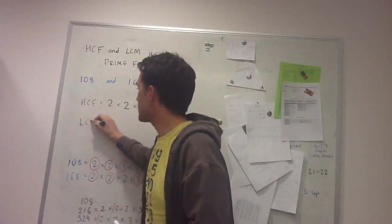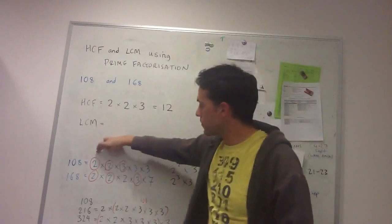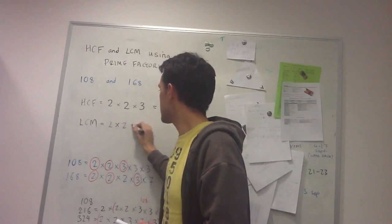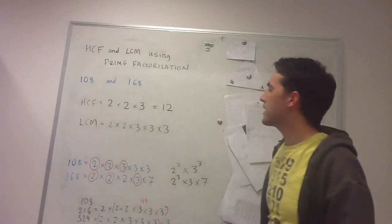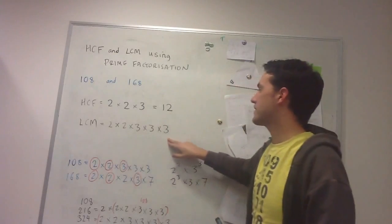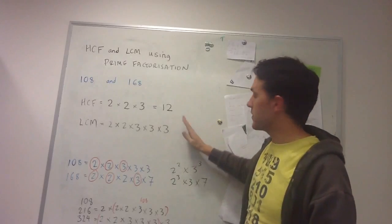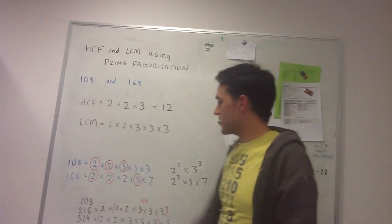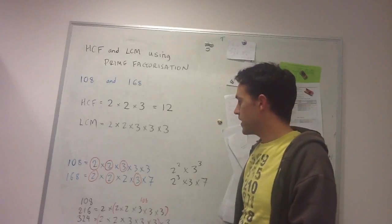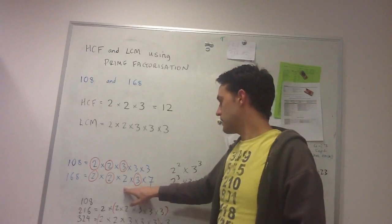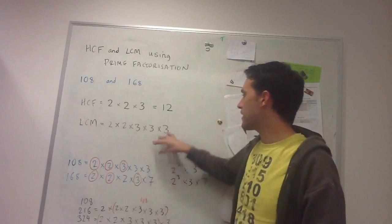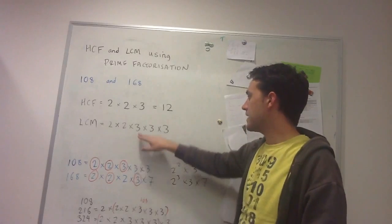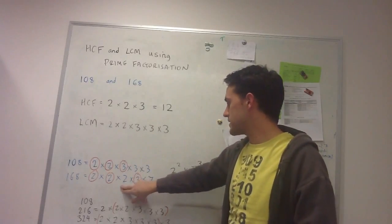So what I do for the lowest common multiple of these numbers is I start with one of the prime factorizations. So I'm going to start with the smaller one in this case. So 2 times 2 times 3 times 3 times 3. So I start with this number is 108. And then no matter what I multiply this by, I know that my result will be a multiple of 108. So I just need to make sure that it's also going to be a multiple of 168. And so all I need to do is add in the things that are in 168 that aren't already here. So I've already got two of the 2's from 168, they're there, and I've already got this 3 there. So I just need to add on this 2 and this 7.